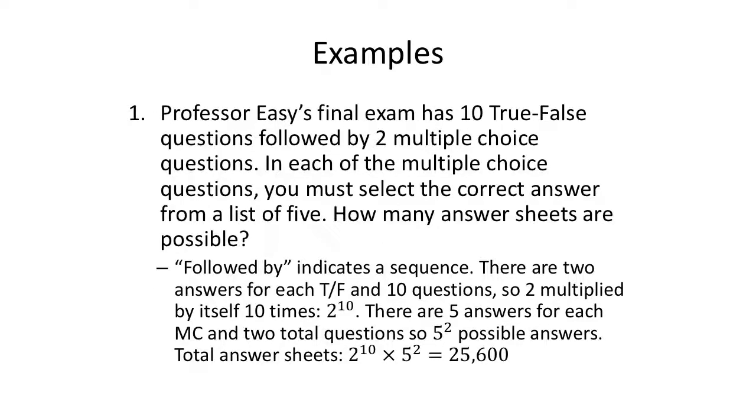Professor Easy's final exam has 10 true false questions, followed by two multiple choice questions. In each of the multiple choice questions, you must select the correct answer from a list of five. How many answer sheets are possible? All right. So Professor Easy's final exam has 10 true false questions followed by, so it indicates a sequence, right? Followed by, then comes next, right? And then.